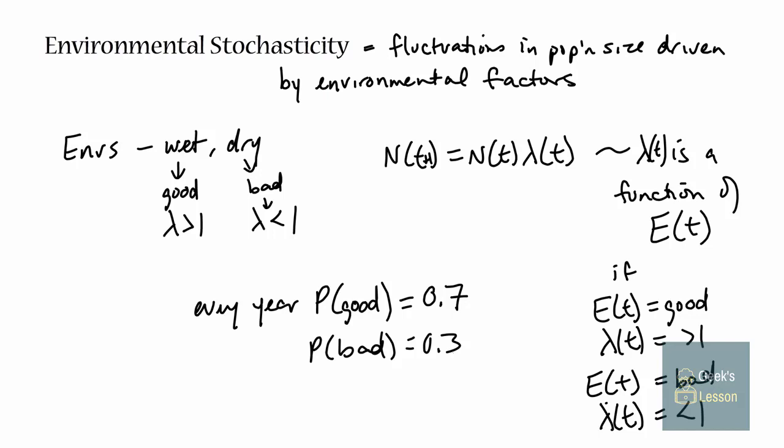We might say wet years are Poisson distributed - every year we define p(good year) = 0.7 and p(bad) = 0.3. In practice, you start with your initial population size and decide what the distribution of environments will be. For each time step, you draw an environment out of the random process, use that environment to choose your growth rate, and update the number of individuals. The next year you draw another environment, which tells you your growth rate and you update the population size. Rinse and repeat, then do many simulations to get a distribution of outcomes.